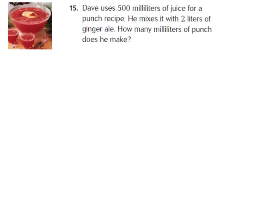And this last question, number 15, says Dave uses 500 milliliters of juice for a punch recipe. He mixes it with two liters of ginger ale. How many milliliters of punch does he make? Whenever you are looking for a bigger number, because he is mixing it together and it says how many, it is almost like he is saying how many all together. So we are going to add. That would be the correct operation for this question. So I know that he has 500 milliliters of juice for the punch recipe and he is going to mix it with two liters. So our job is to take this two liters and turn it into milliliters, just like he had in the first part of the question.